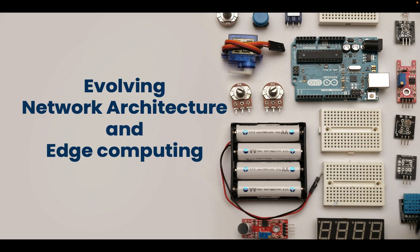Hello and welcome to this chapter. In this chapter we are going to talk about evolving network architecture and edge computing. As we have discussed, even in 5G we have something called MEC — Multi-Access Edge Computing — which requires you to bring the computing power to the edge of the network, or closer to the base station. That will help us serve applications which require very low latency and very high throughput.